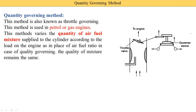Quantity means: suppose in an engine we supply 0.5 kg per minute of the fuel mixture. And it is changed to 0.4, 0.6, or 0.7 — then it is known as quantity governing. So unlike quality governing, the air-fuel ratio remains the same; just the quantity is changed.